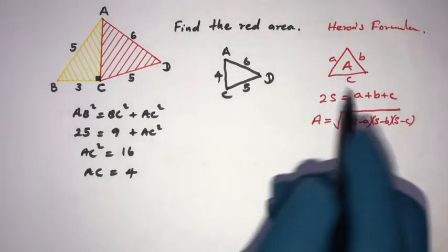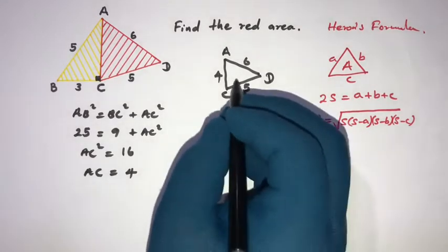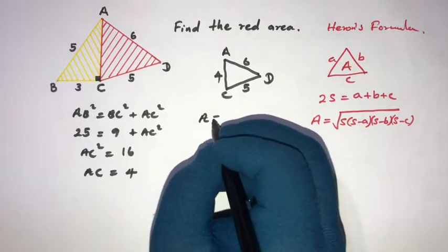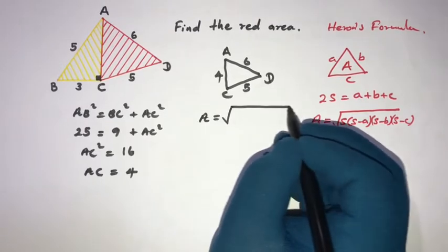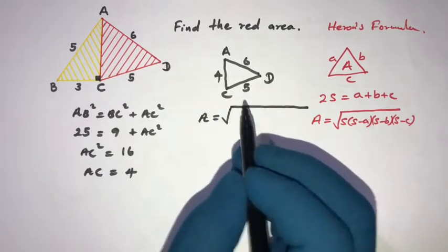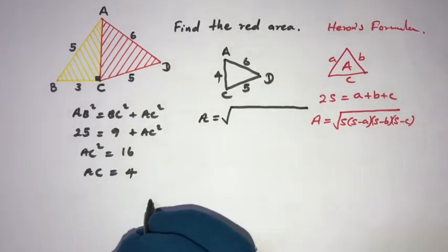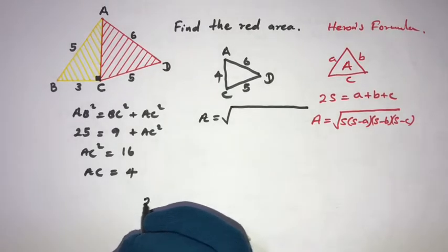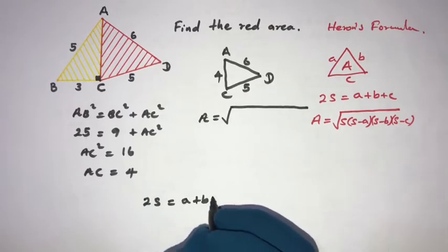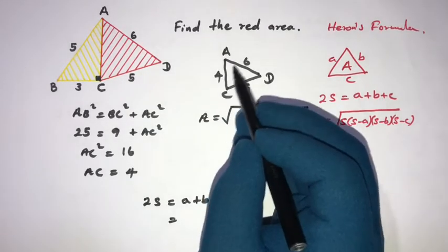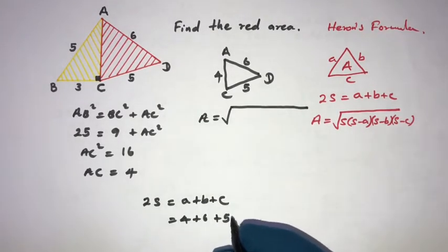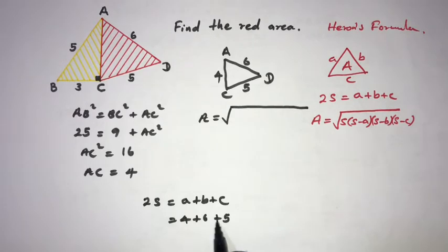Now we can apply this formula to triangle ACD. The area A equals the square root of S times (S minus A) times (S minus B) times (S minus C). We need to find S. We know 2S equals A plus B plus C.